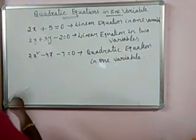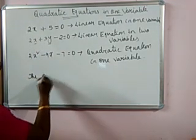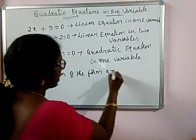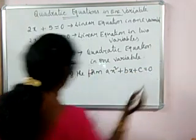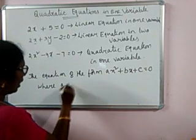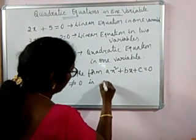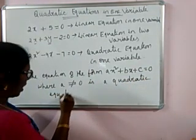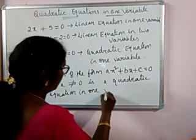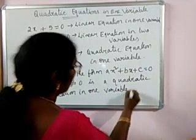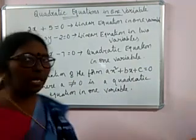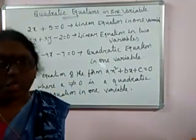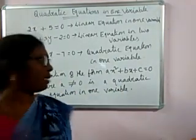The equation of the form ax square plus bx plus c equal to 0, where a is not equal to 0, is a quadratic equation in one variable. The variable x is used and the highest power of the variable is 2. So, it is a quadratic equation in one variable.